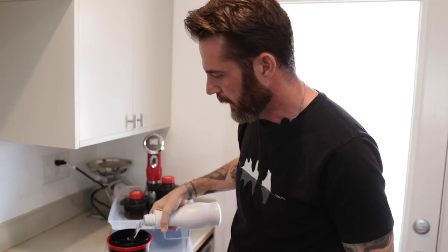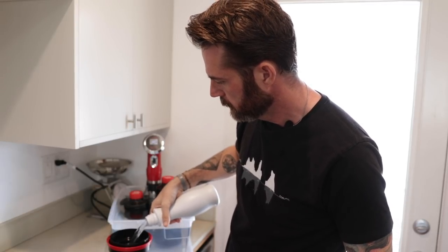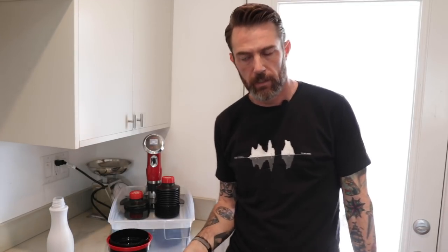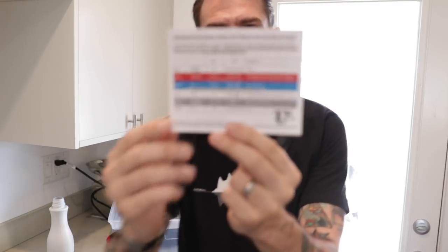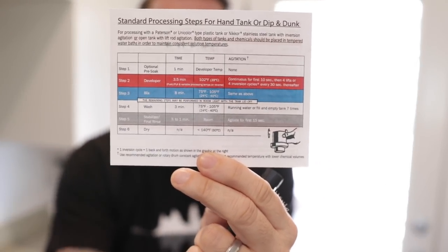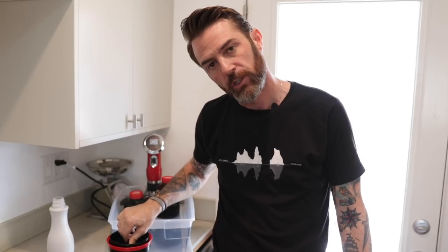I had this rinse bottle in with the chemicals so it's up to 102 degrees — pouring it on top. The Cinestill kit includes a really helpful little card that outlines the steps, temperatures, and times. Step one: optional pre-soak — keyword is optional. I've decided to do it, and it says one minute at the developer temperature with no agitation, though I'll just use the little agitation stick included with the Patterson tank. I'll let this sit for about a minute to bring it up to temperature.